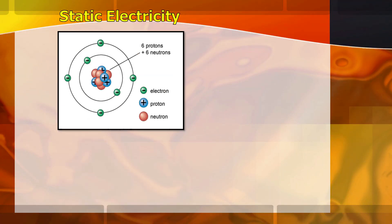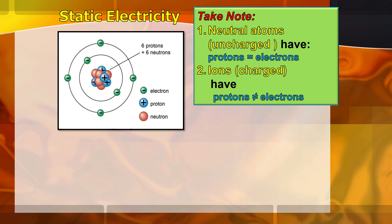Just a recall: when we are talking about subatomic particles, when there is an equal number of protons and electrons, we call this a neutral atom — they are uncharged and their proton and electron numbers are equal. When there is a variation in the number of electrons and protons, we call this atom an ion, or the charged atom. Ions can be classified into two: cations, which have positive charge, and anions, which have negative charge.